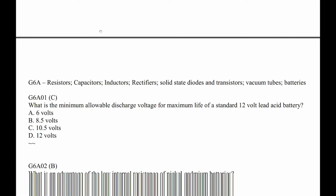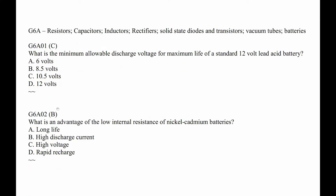This is Part 6, G6A01. What is the minimum allowable discharge voltage for maximum life of a standard 12 volt lead acid battery? Well, I think a good guess is 10.5, which is the answer. That sort of makes sense because now it's down roughly 20%.